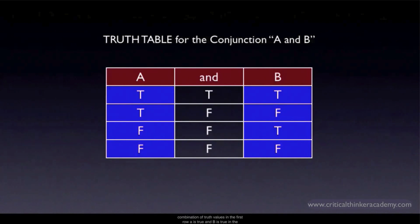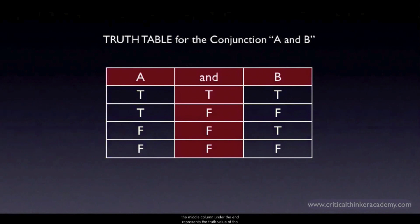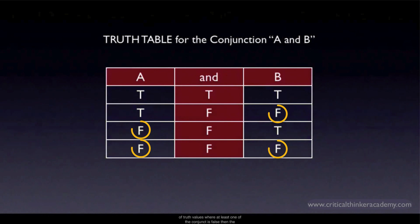In the first row, A is true and B is true. In the second row, A is true and B is false. In the third row, A is false and B is true. And in the last row, A is false and B is false — this exhausts all possible combinations. The middle column under the AND represents the truth value of the conjunction A and B as a whole. In the first row, if both A and B are true, the conjunction is true. For every other combination where at least one conjunct is false, the conjunction as a whole is false.